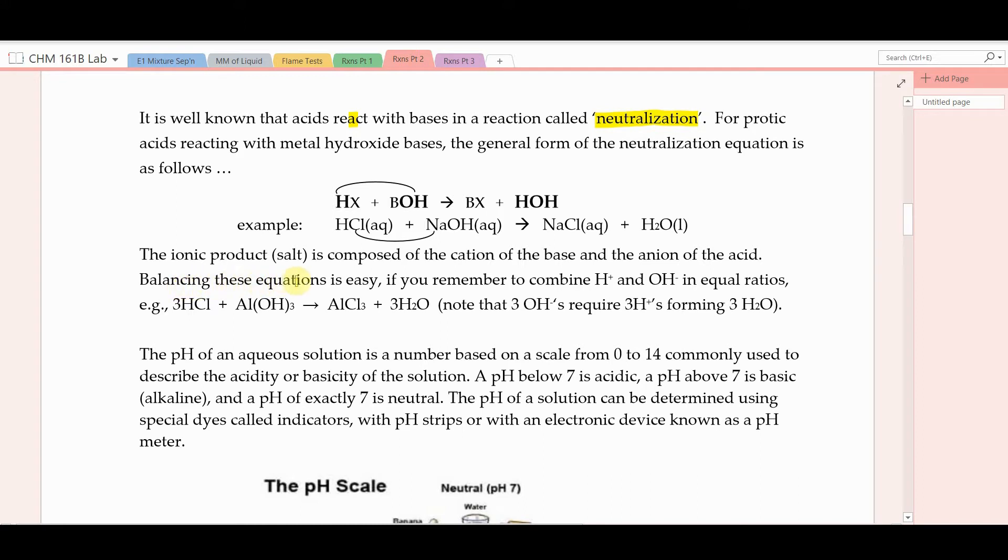Now, balancing this type of equation is quite easy. Just remember that hydrogen ion and hydroxide ion are combining in equal ratios. So if you had to balance the equation of hydrogen chloride reacting with aluminum hydroxide, you can see in the formula of aluminum hydroxide, it has three hydroxides. So you know that you'll need three moles of hydrogen chloride to produce three moles of water and aluminum chloride as the salt.